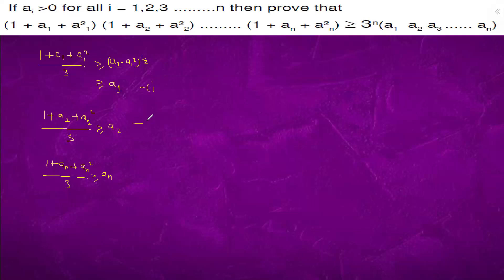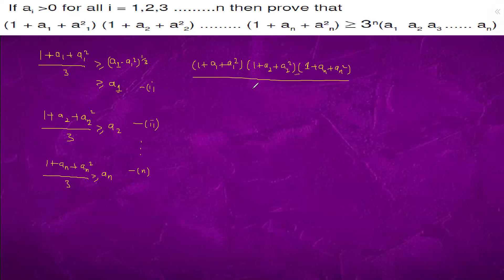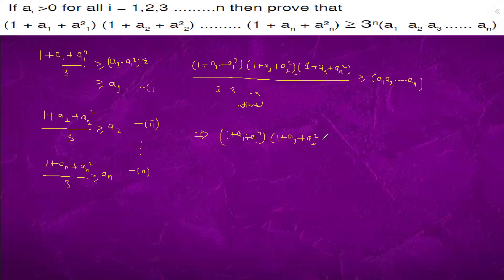We will multiply equations 1, 2, and so on up to equation n. It will become: (1 plus a1 plus a1 whole square) times (1 plus a2 plus a2 whole square) times ... times (1 plus an plus an whole square), all divided by 3 multiplied n times, is greater than or equal to 3 to the power n.